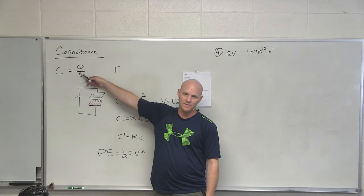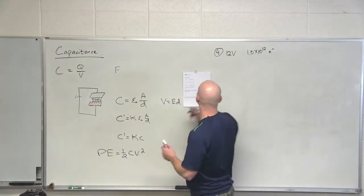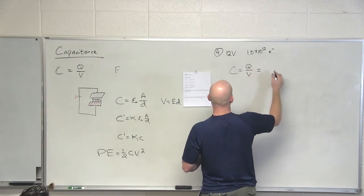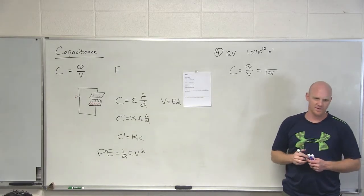So in this case, if I want to know what the capacitance is, we're going with the straight-up definition of capacitance: Q over V. Which one was given to us directly? V. And what was the volts? 12 volts. Now the Q wasn't given directly, but what were we told that's gonna allow us to figure it out?